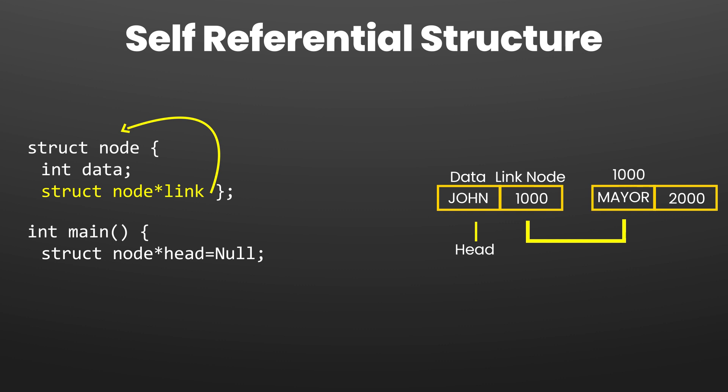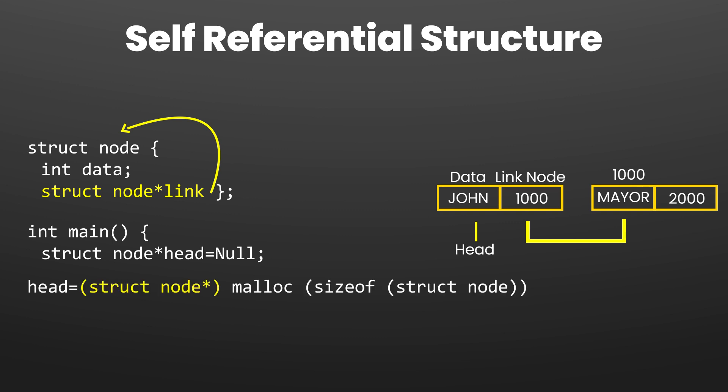We call this pointer head. Next, we want head to get the memory size of a node, so we use: head = malloc(sizeof(struct node)). We can also use typecasting with (struct node*), but we can get away without explicitly typecasting the malloc call.